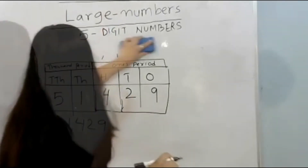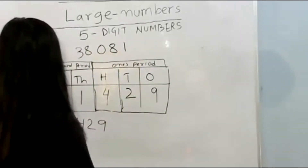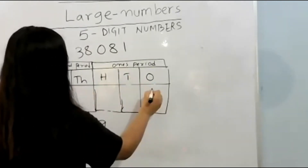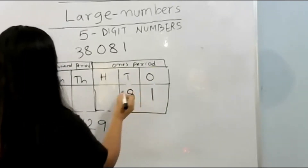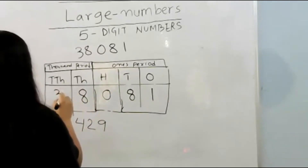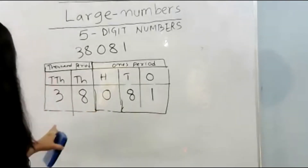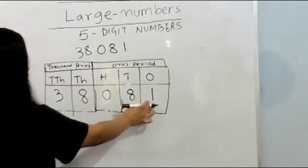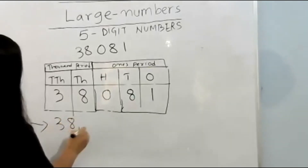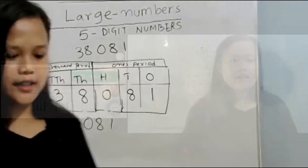Another example: 3, 8, 0, 8, 1. The ones place is one, tens place is eight, hundreds place is zero, thousands place is eight, and the ten thousands place is three. There is a zero in the hundreds place, so when we read this number we read it as 38,081 — we do not read it as zero hundreds. The standard form is 38,081 and the number name is thirty-eight thousand and eighty-one.